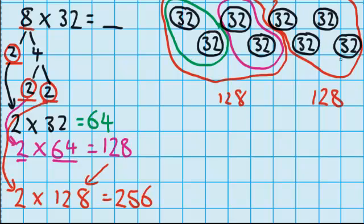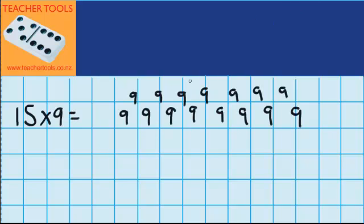Now let's try this question here. 15 groups of 9. And over here you can see I've got 15 groups of 9. Well, our first step is to find out what the factors of 15 are. I can see that 3 times 5 is 15.